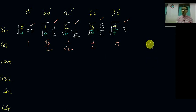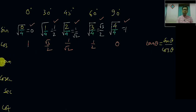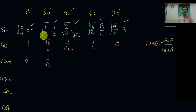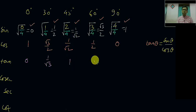Now you know that tangent of theta is equal to sin theta upon cos theta. So tan 0 degree equals sin 0 degree divided by cos 0 degree: that is 0 upon 1, which equals 0. Tan 30 degree is (1/2) divided by (root 3/2), which gives 1 upon root 3. Tan 45 degree is (1/root 2) divided by (1/root 2), which equals 1. Tan 60 degree equals root 3, and tan 90 degree is 1 upon 0, which is undefined.